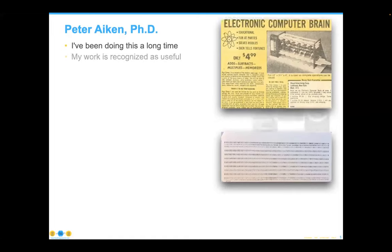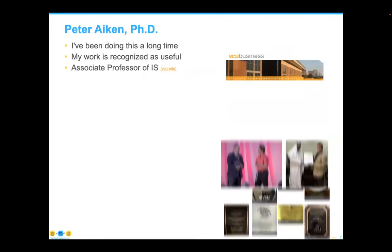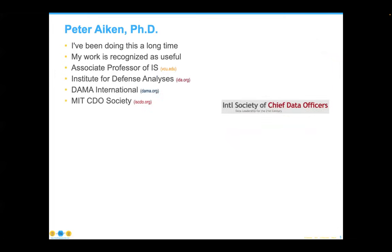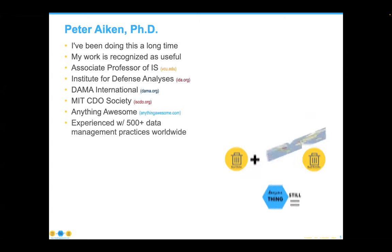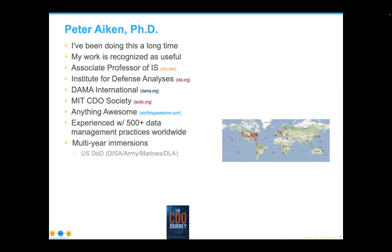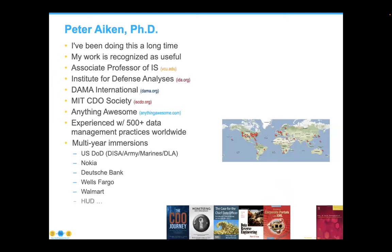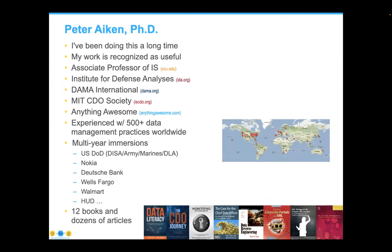Let me introduce our speaker for the webinar series, Dr. Peter Akin. Peter is an acknowledged data management authority and associate professor at Virginia Commonwealth University, president of DEMA International, and associate director of the MIT International Society of Chief Data Officers. For more than 35 years, Peter has worked with hundreds of data management practices in 30 countries. Among his 12 books are many firsts — before Google, before data was big, before data science. Peter has founded several organizations that have helped more than 200 organizations leverage data-specific savings measured at more than 1.5 billion US dollars. His latest endeavor is anything awesome. Let me turn everything over to Peter.